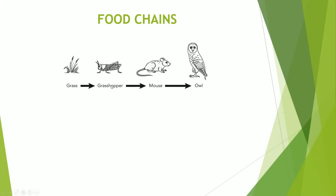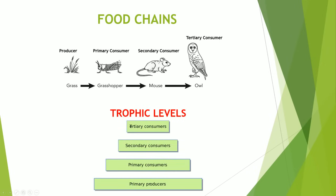In a food chain, you'll always start with a producer. The producer will capture the sunlight energy and transform it into chemical energy inside nutrients. In this particular food chain, we have the producer getting eaten by the primary consumer, in which case it's a grasshopper, and the mouse then eats the grasshopper — the mouse is a secondary consumer — and the owl, which eats the mouse, is a tertiary consumer. These represent trophic levels. An important thing to note is that in a food chain, you'll never have the sun, because the sun is not an organism. Also, the arrow will always go towards the direction of energy flow. So because the grasshopper is eating the grass, the arrow will go towards the grasshopper.